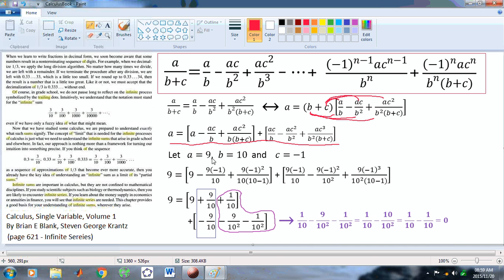Now, if we let a equal to 9, b equal to 10, c equal to -1, then we're going to end up with this particular bracket here, which has 9 plus 9 tenths plus 1 tenth. And the only common elements here will be the 9 tenths and the minus 9 tenths. And all these terms inside here will actually add up to give you 0 so that the equation is true.